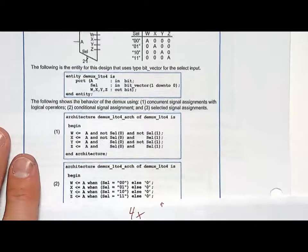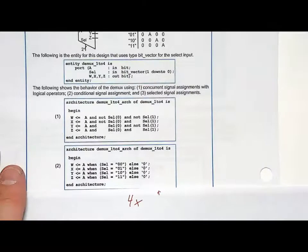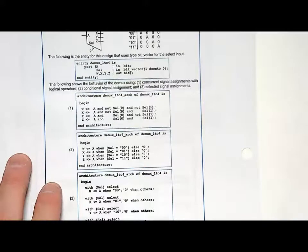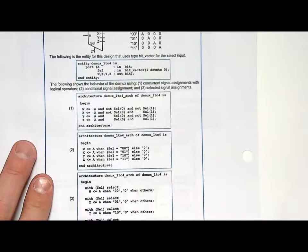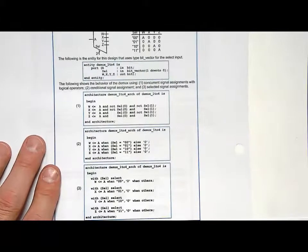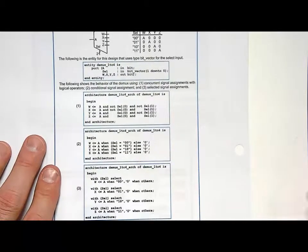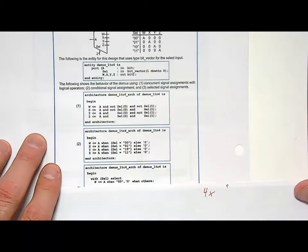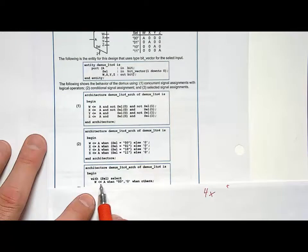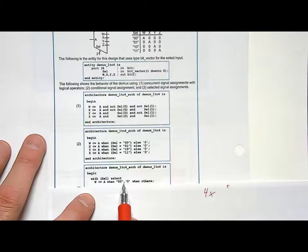Now, as you can imagine, these are four conditional signal assignments. As you can imagine, conditional signal assignments and selected signal assignments are very similar. In this situation though, the selected signal assignment actually took more text, because you had to do four unique selected signal assignments. So here's the first one. And you go with select, select, or with SEL, our input select line, select. And you say W gets A, when 0, 0, 0 when others.